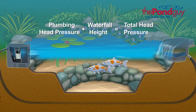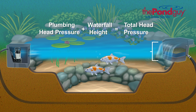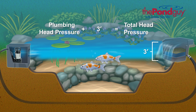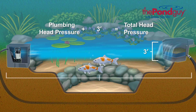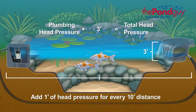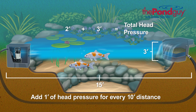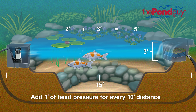To determine the head pressure, first measure the total number of feet from the top of the waterfall to the water surface. For example, let's say the height of your waterfall is three feet from the water surface — then your head pressure is three feet. Now measure the length of your plumbing from the pump to the waterfall. Add one foot of head pressure for every 10 feet of plumbing, always rounding up. If the length of your plumbing is 15 feet, then add two feet of head pressure, giving you a total head pressure of five feet.